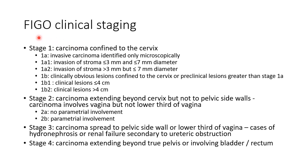Now let us see about the FIGO staging of carcinoma cervix. Remember, carcinoma cervix is staged clinically. Stage 1 is carcinoma cervix confined to the cervix, further subdivided into stage 1a and 1b. Stage 1a is invasive carcinoma identified only microscopically, further subdivided into 1a1 and 1a2. In stage 1a1, there is invasion of stroma less than or equal to 3 mm and less than or equal to 7 mm diameter.